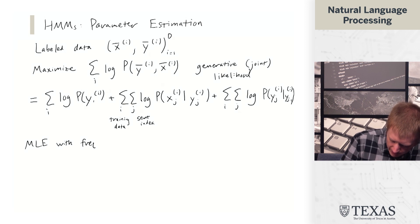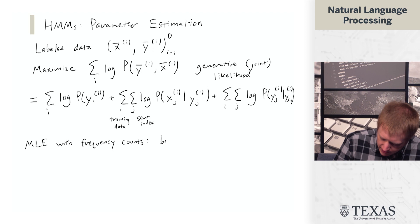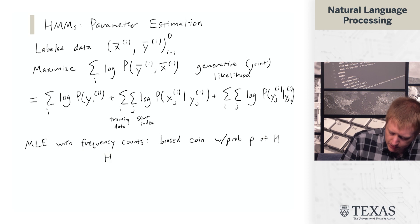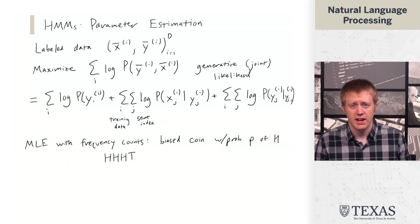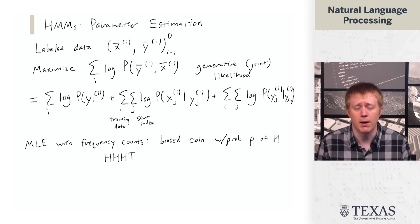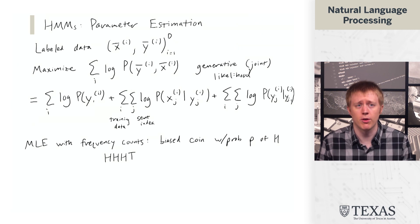So I'm going to call this MLE with frequency counts. So suppose we have a biased coin with probability p of heads. And then we observe the sequence h, h, h, t. And I ask you, what is the maximum likelihood probability p for this coin?